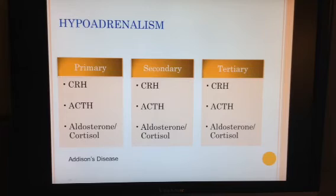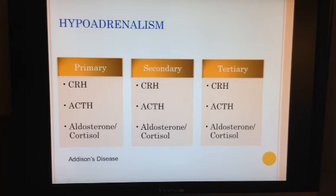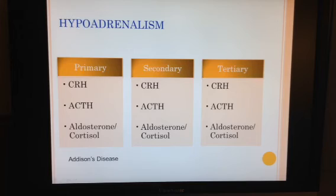Try to predict the hormone levels depending on where the problem is originating from. Remember, the primary organ is the actual organ that releases the active hormone — in this case, the adrenal gland. The secondary organ, the pituitary, is the one that stimulates the primary, and the tertiary organ, the hypothalamus, stimulates the secondary organ.